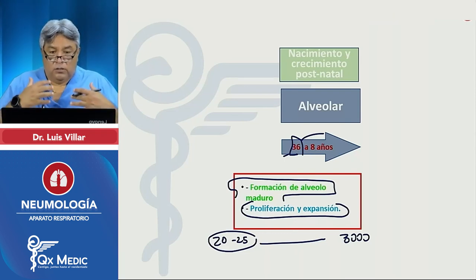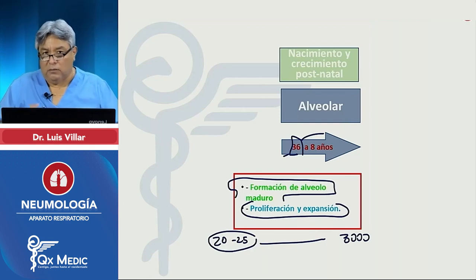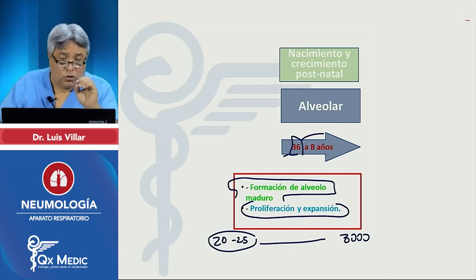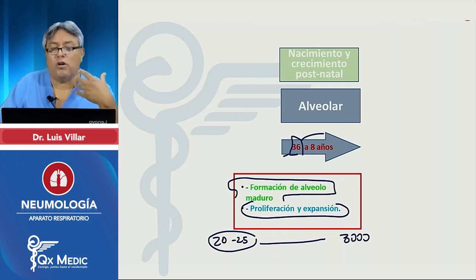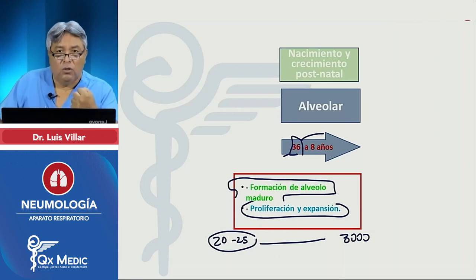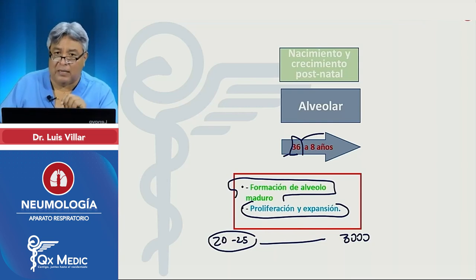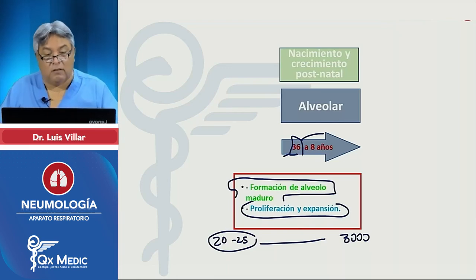Recuerden que si toman una muestra de gases arteriales en el feto intraútero, tendrán un oxígeno muy bajo, porque están midiendo el oxígeno disuelto en la sangre. La hemoglobina fetal, que es la que predomina, tiene mucha mayor afinidad por el oxígeno que la hemoglobina común. Entonces la hemoglobina fetal, al ser más afín por el oxígeno, va a permitir una buena oxigenación de los tejidos. Sin embargo, al medir el oxígeno circulante disuelto, va a estar bajo. Entonces, si preguntan quién tiene hipoxemia sin hipoxia, es el feto — eso es característico.